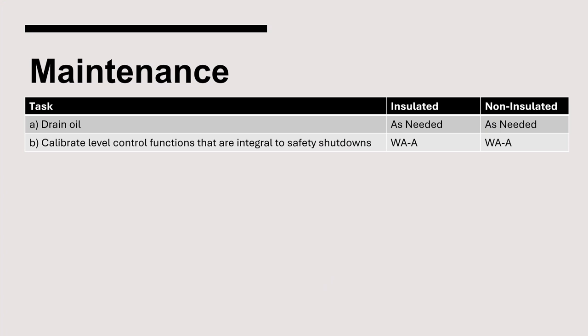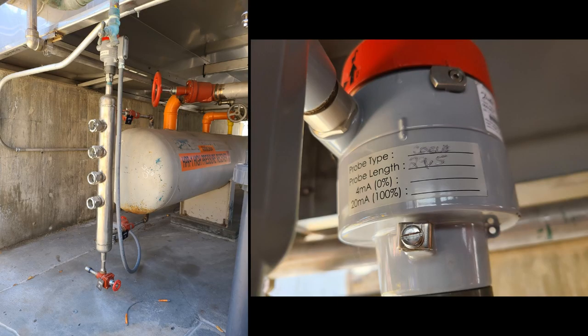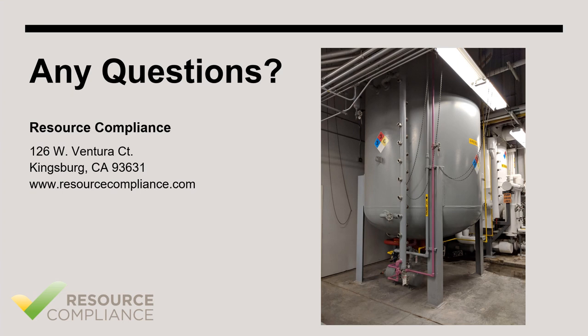IIAR 6 has two maintenance requirements for pressure vessels. First, oil must be drained as needed; oil typically collects in vessels on the low side of the system, so this is rarely required for high pressure receivers. The second requirement is to calibrate all level control functions that are integral to safety shutdowns where applicable — for example, if a level probe were interlocked to shut off liquid-injection cooled compressors if the level dropped too low, the calibration requirement would apply. This concludes our video on high pressure receivers. We have more videos on our channel about ammonia refrigeration and process safety management — feel free to check them out if you are interested.